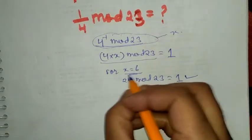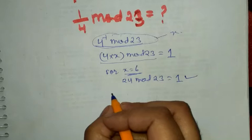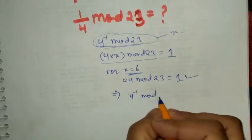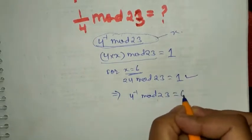So the value of x will be 6, so 4 inverse mod 23 is 6.